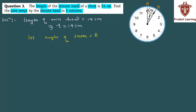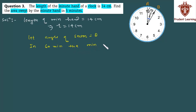Minute hand ek complete revolution karne mein ek ghanta lagata hai, matlab 60 minutes mein woh ek revolution poora karta hai. Aur ek revolution mein 360 degree ka angle describe karta hai. We know that in 60 minutes, the minute hand describes an angle of 360 degrees.